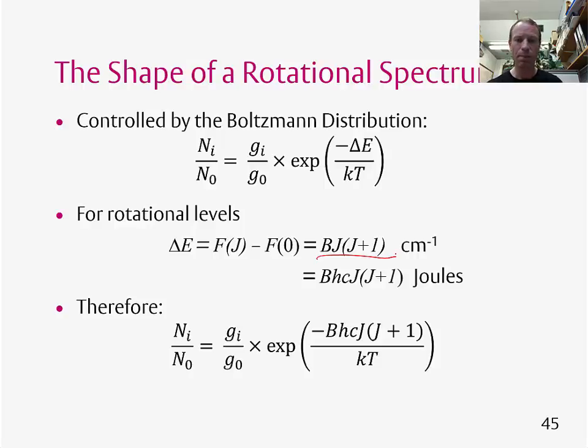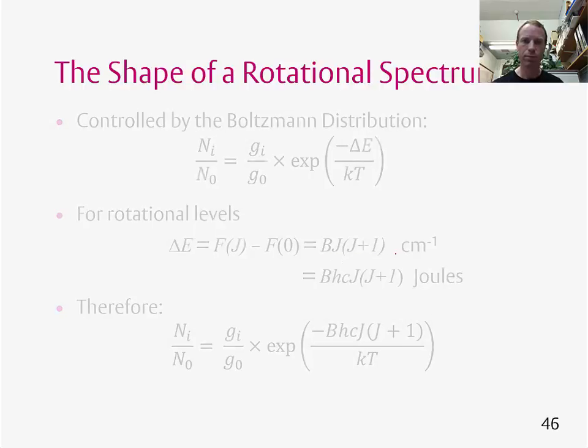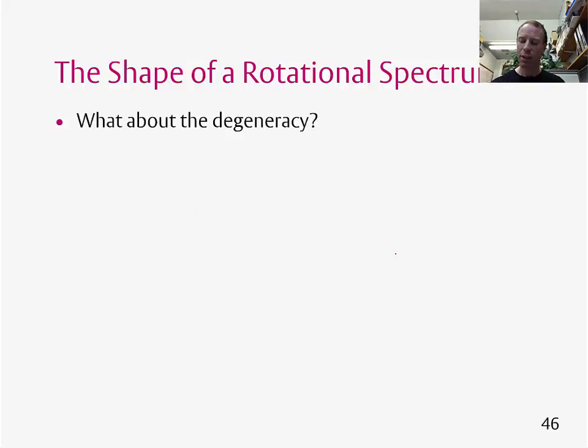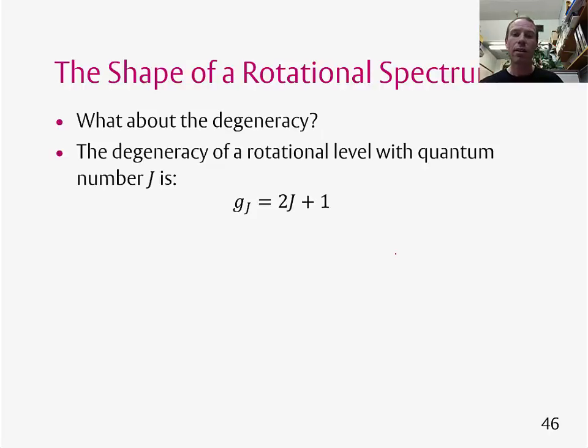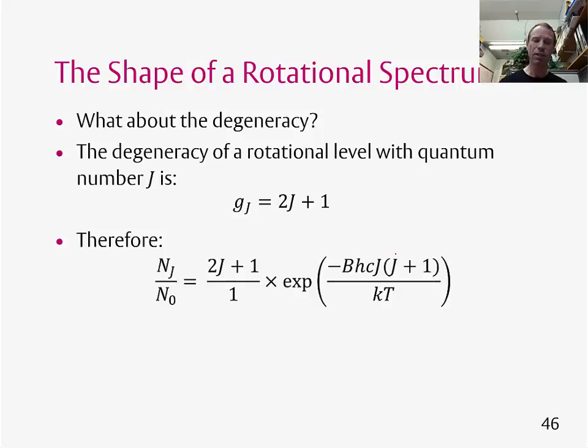So now we need to think a bit more about this expression. We haven't yet thought about the degeneracy, we haven't put that in. We saw before in a previous topic that a rotational level is degenerate, and it has a degeneracy of 2J+1. And this was to do with the different orientations in which the angular momentum could point. So we now need to put this into the Boltzmann equation. So if J is equal to 0, then the degeneracy is equal to 1, so that gives us this 1 here. Otherwise, we have the standard degeneracy of 2J+1 here. So now we have the full expression.